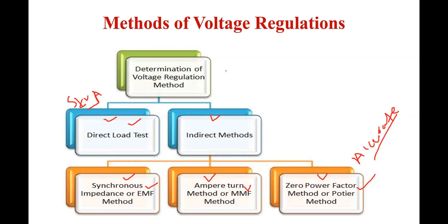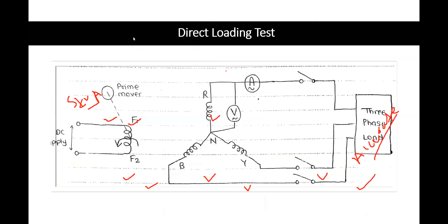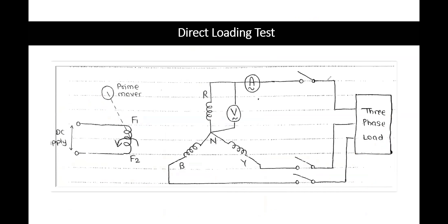In the direct loading test, observe this diagram — this is the arrangement to calculate voltage regulations. Here I connect directly a three-phase load to the alternator. This is your armature winding — R, Y, B star-connected armature winding, that is why neutral is present. Between each phase and neutral I connect a voltmeter, and the R phase is connected directly to the load. I provide switches so I can calculate full load voltage and no-load voltage.